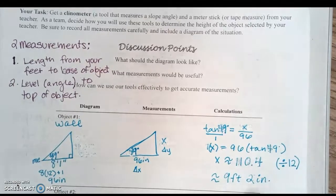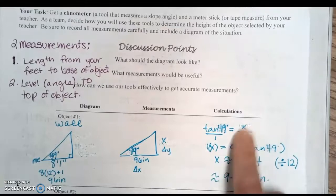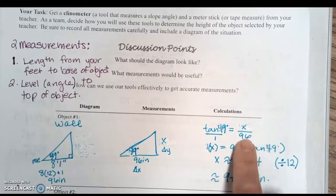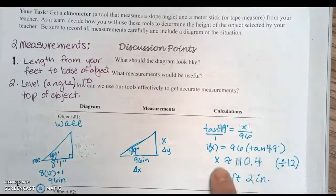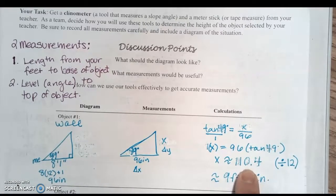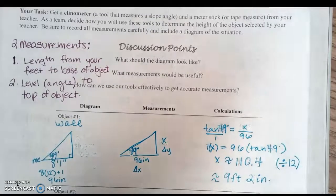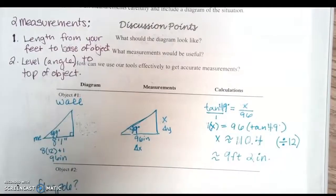Once you have your proportion set up, you can do the cross product: 1 times x is x, and 96 times the tangent of 49—you multiply that on your Desmos scientific calculator—gives you approximately 110.4 inches.